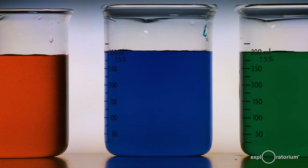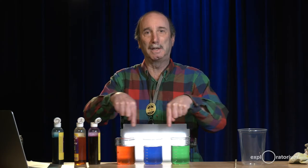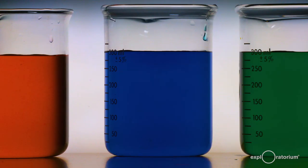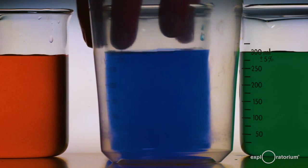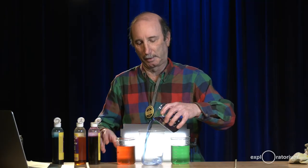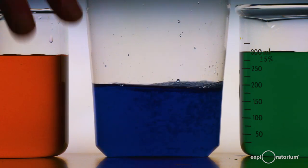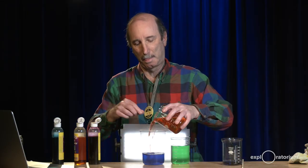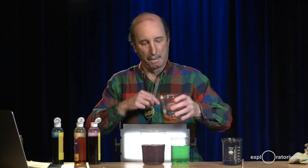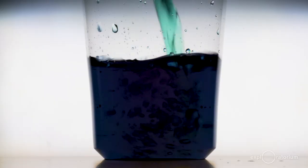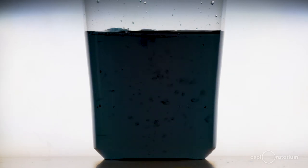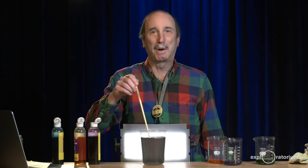So here we have the complementary colors, the subtractive primaries. When you mix them together, they mix together into the additive primaries. Isn't that interesting? What happens if we mix everything together? Let me bring a slightly bigger container in and I'm going to mix together the blue, and the red, and the green. Stir them all together and I think you can already see what's happened here. If you take away all the colors, you're left with black.